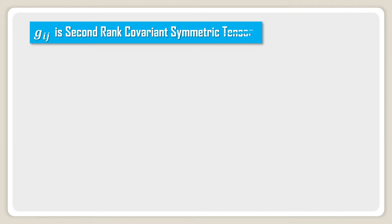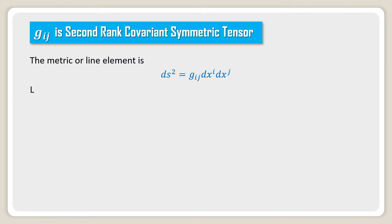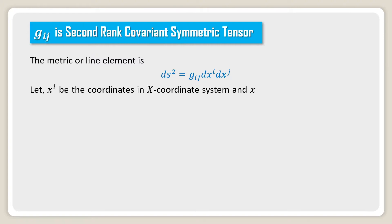g_ij is a second rank covariant symmetric tensor. The metric or line element is ds² = g_ij dx^i dx^j.